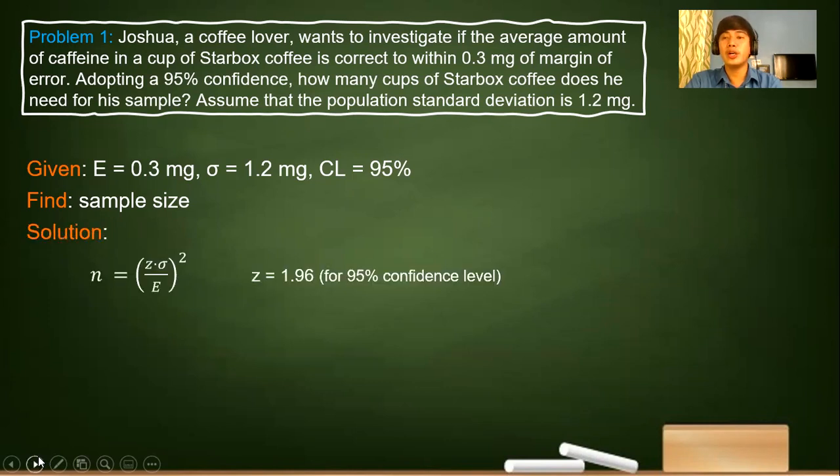For the solution, we use the formula: the sample size n is equal to (z × σ / E) squared. We use 1.96 for a 95% confidence level times 1.2 milligrams over 0.3 milligrams as our margin of error, squared.